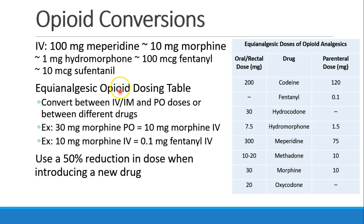That's a nice general rule of thumb, but if you want specific accurate conversions, we use what's called an equianalgesic opioid dosing table, which allows us to convert not only between different drugs but also between parenteral and enteral dosing. For example, 30 mg of oral morphine is the same as 10 mg of IV morphine. Then we can convert IV morphine to another drug like fentanyl, which would be 0.1 mg of fentanyl. Whenever we decide to convert one drug to another, we usually cut the dose in half to account for the fact that patients may have more sensitivity to a new drug than they had to the old drug.